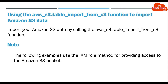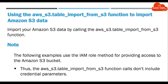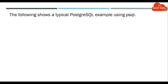Note: The following examples use the IAM role method for providing access to the Amazon S3 bucket. Thus, the aws_s3.table_import_from_s3 function calls don't include credential parameters. The following shows a typical PostgreSQL example using PSQL.